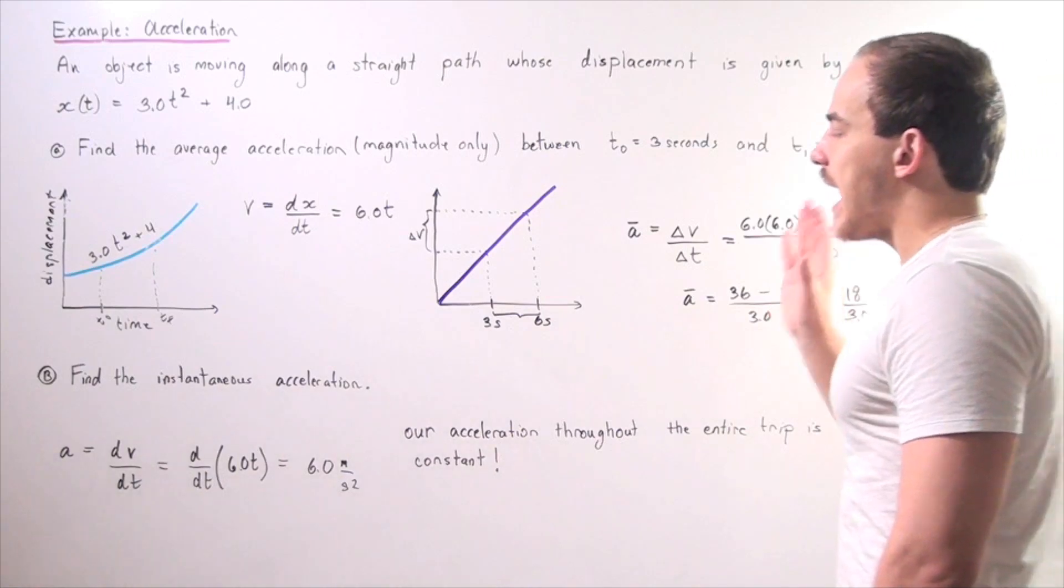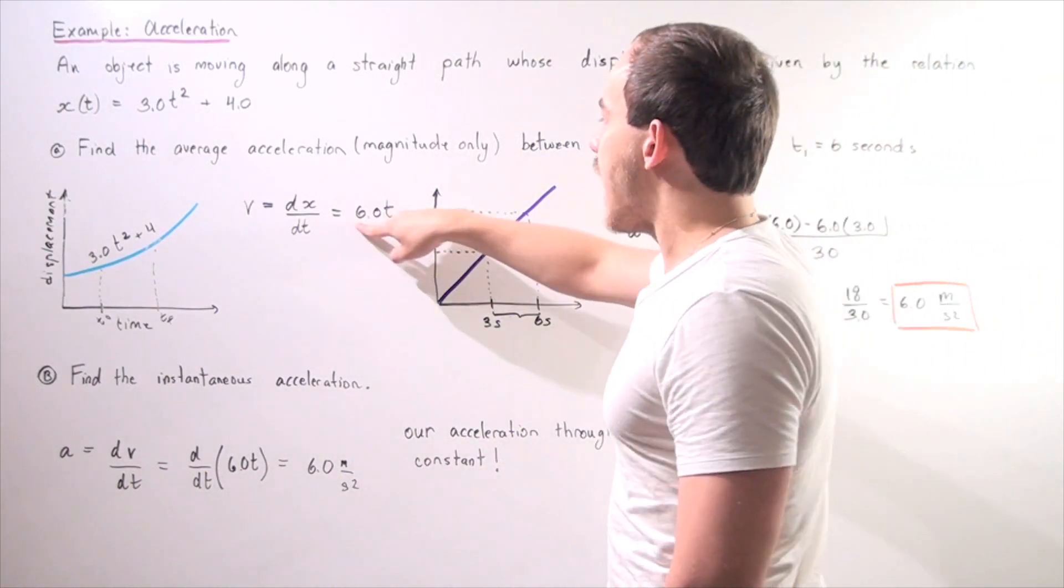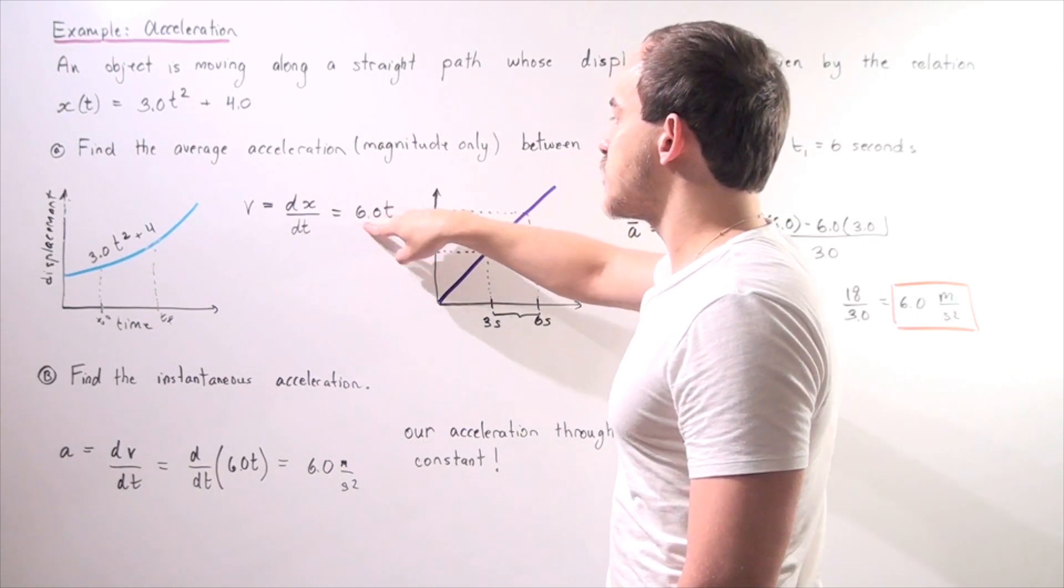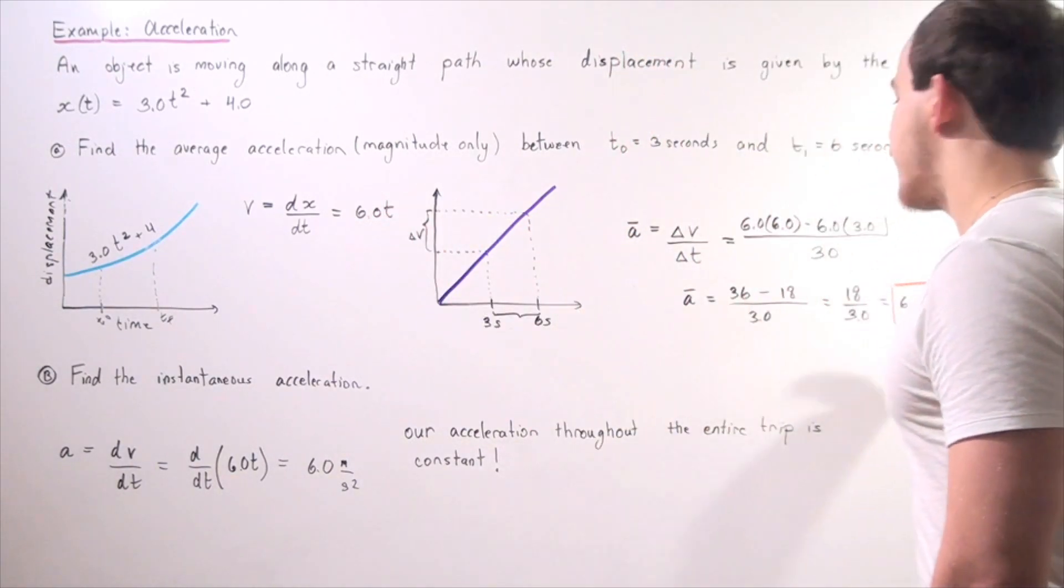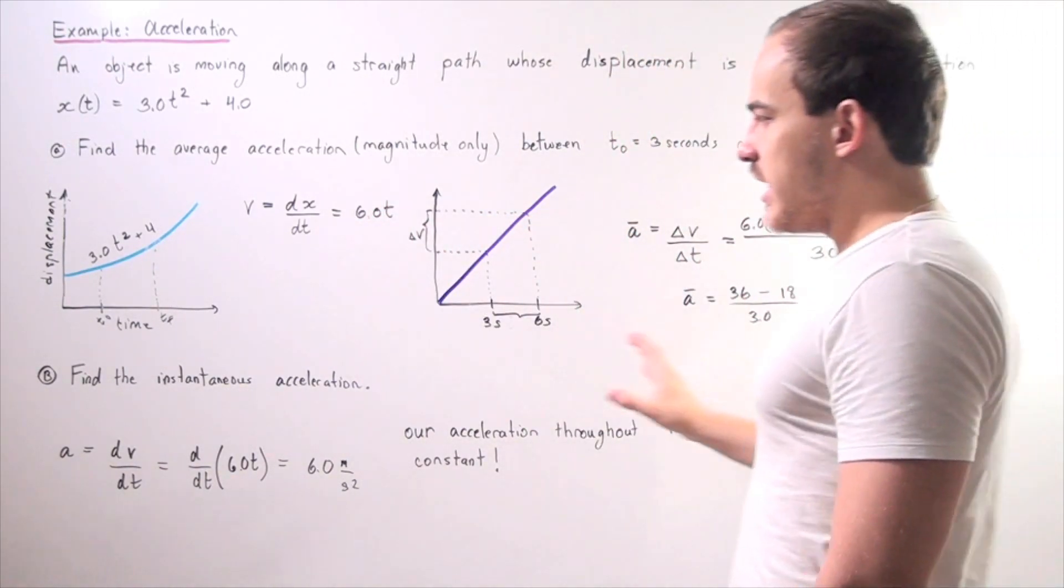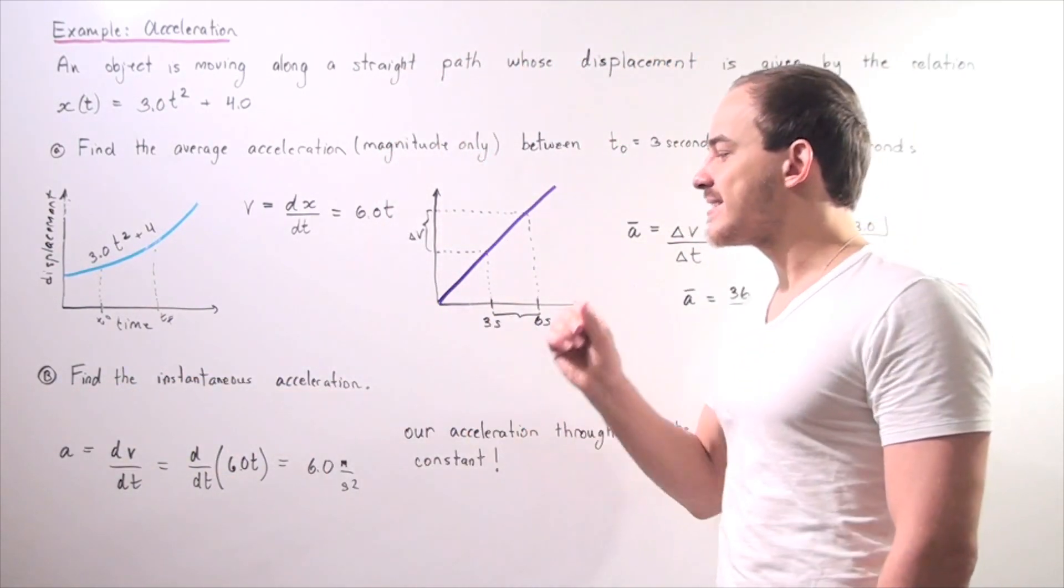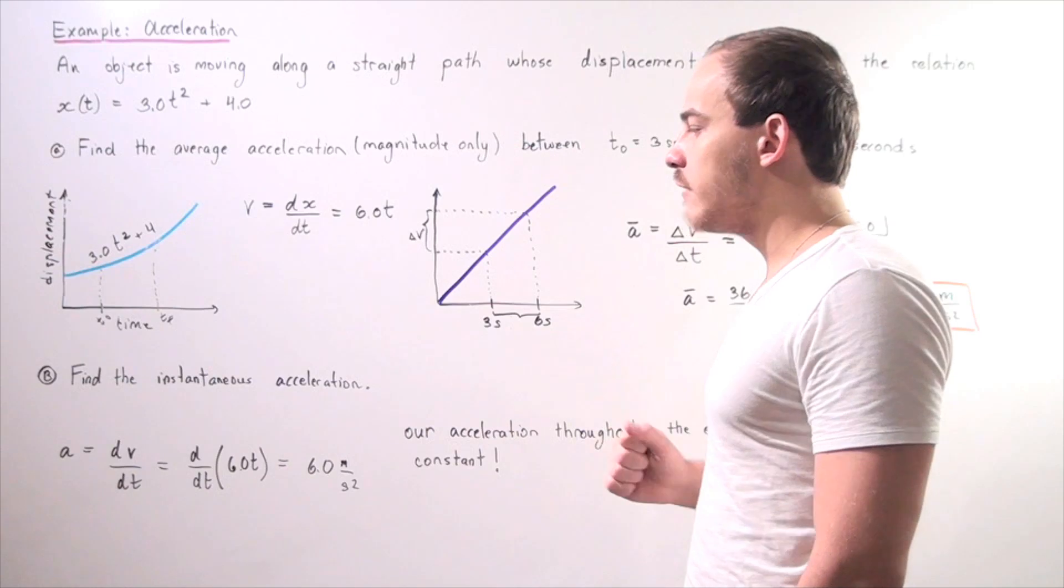And that's exactly what the average acceleration is from our graph, because this is our slope of 6.0, and these numbers are exactly the same. So let's go to part B: find the instantaneous acceleration, the magnitude of it.